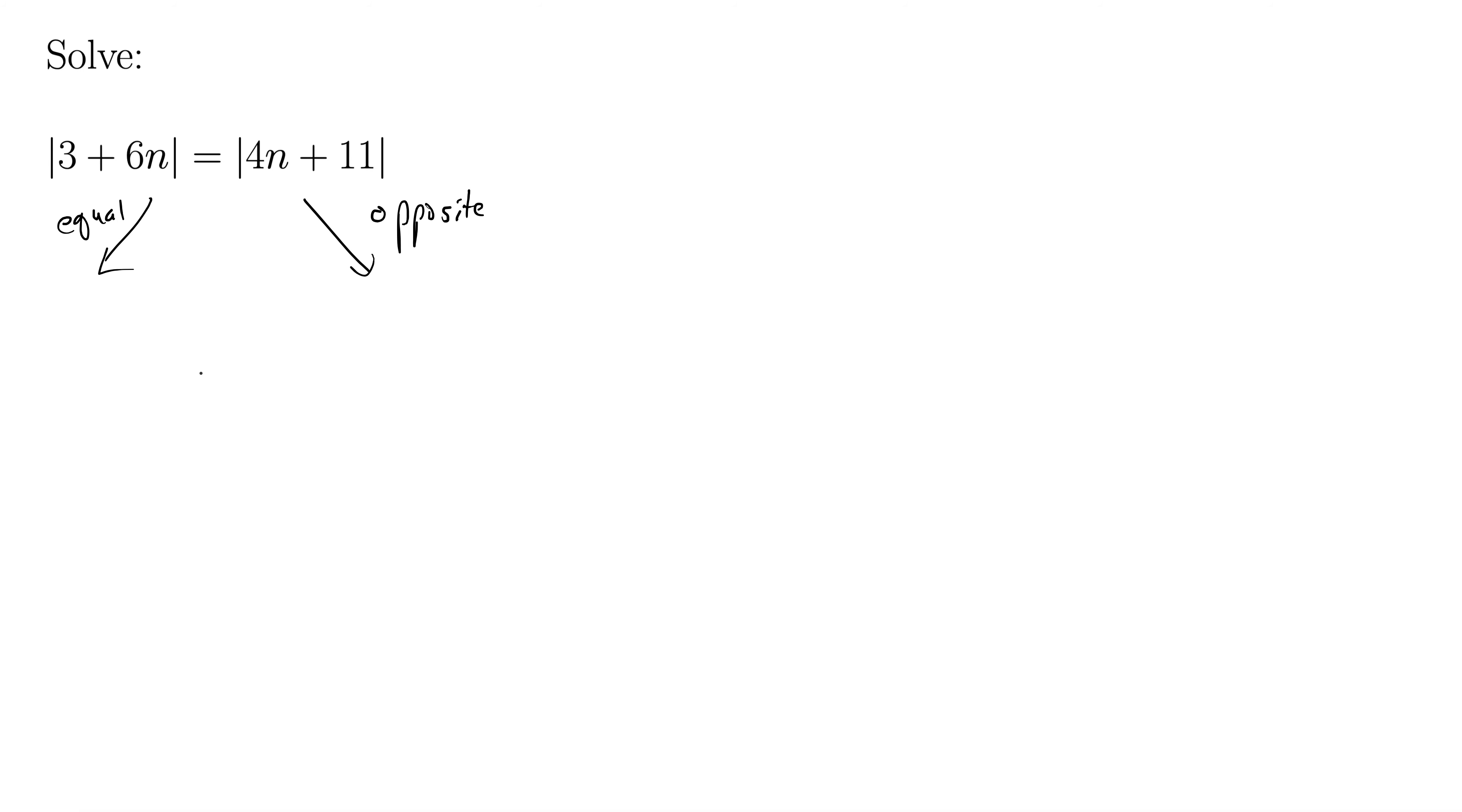Okay, the equal one means we just drop the absolute value, so 3 plus 6n equals 4n plus 11. Alright, that's the fun one, that's the easy one.